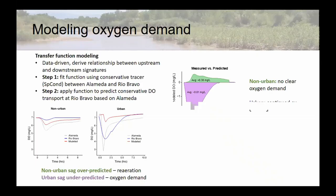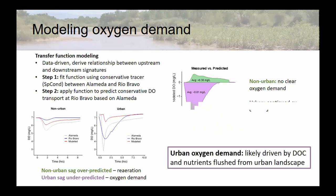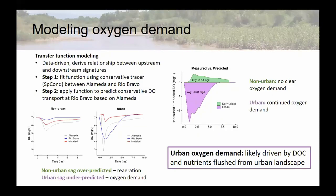To visualize that: we have mostly positive values for measured minus model for our non-urban, so no clear oxygen demand. For urban, we have pretty clear continued oxygen demand. We think this is probably linked to the carbon and nutrients being flushed from the landscape, potentially driving heterotrophic activity and continuing that oxygen demand through this reach.